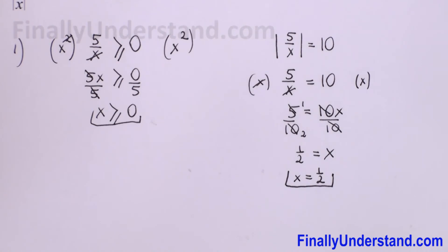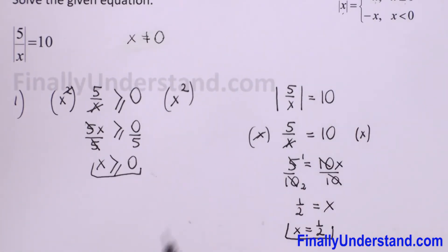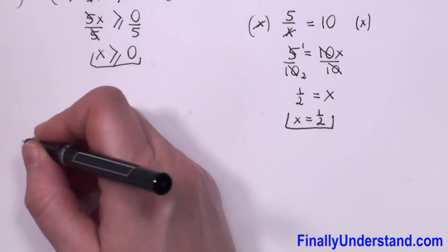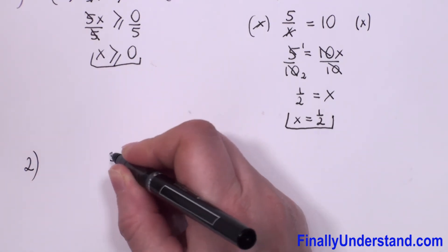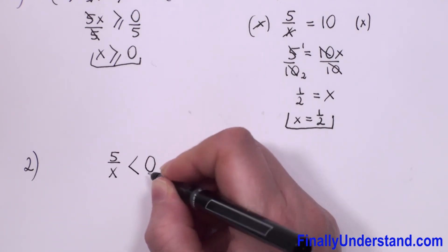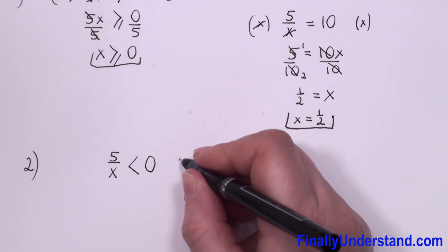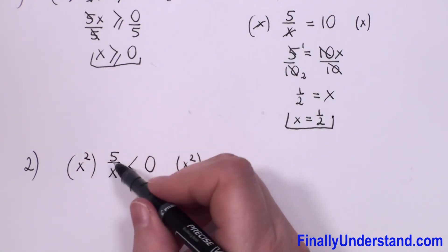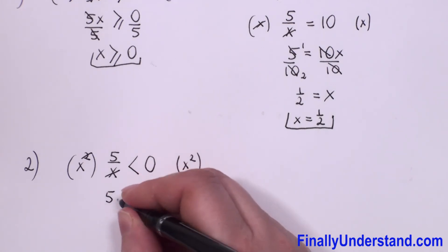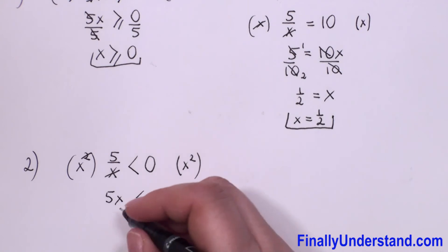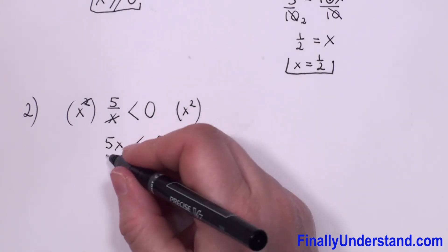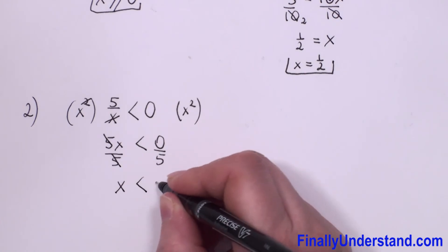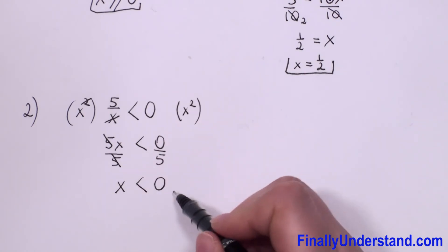Now we go to the second case, when the number between the absolute value bars is negative. For the second case, 5 over x is less than 0. We multiply both sides by x squared — x squared cancels — giving 5x is less than 0. Dividing both sides by 5, we get x is less than 0. This is our domain for the second case.